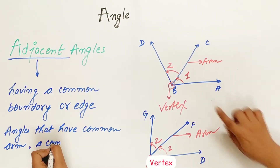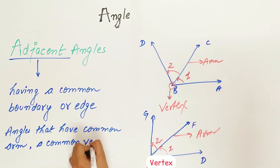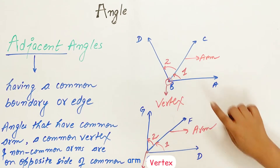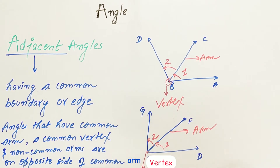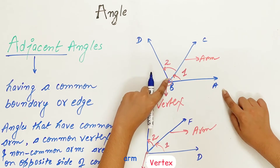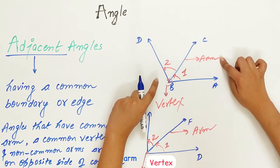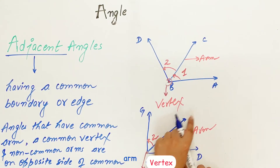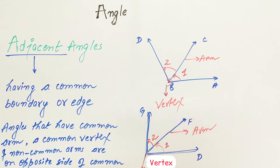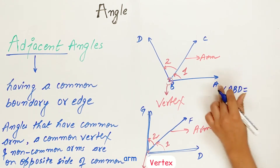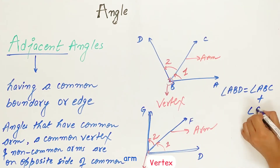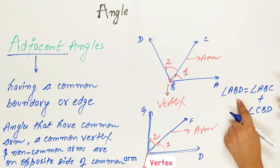Adjacent angles also share a common vertex — B in the first case and E in the second. The non-common arms lie on opposite sides of the common arm. Angle ABD equals angle ABC plus angle CBD, so an adjacent angle is the summation of two angles.